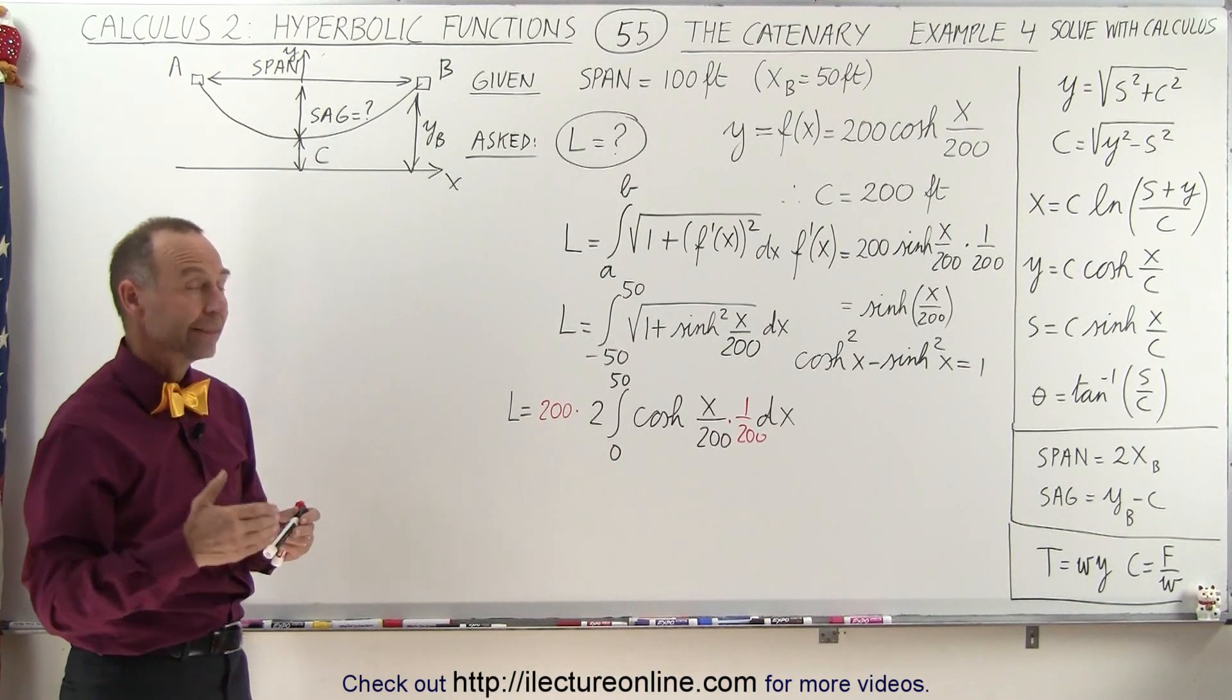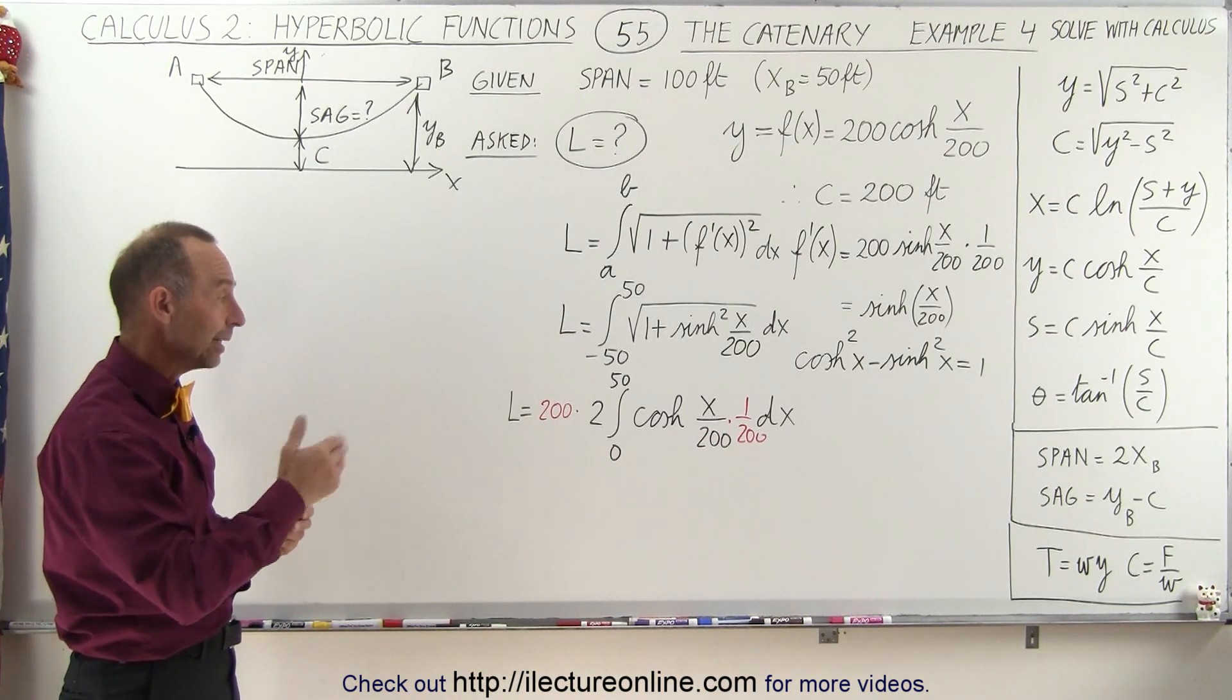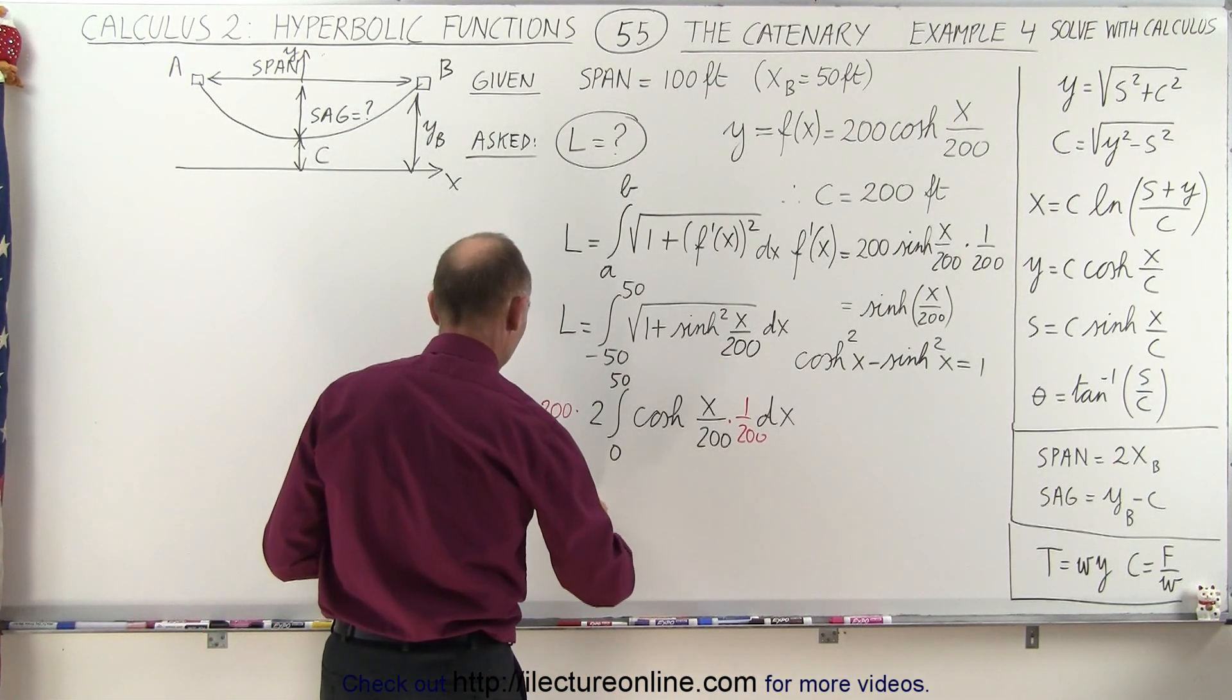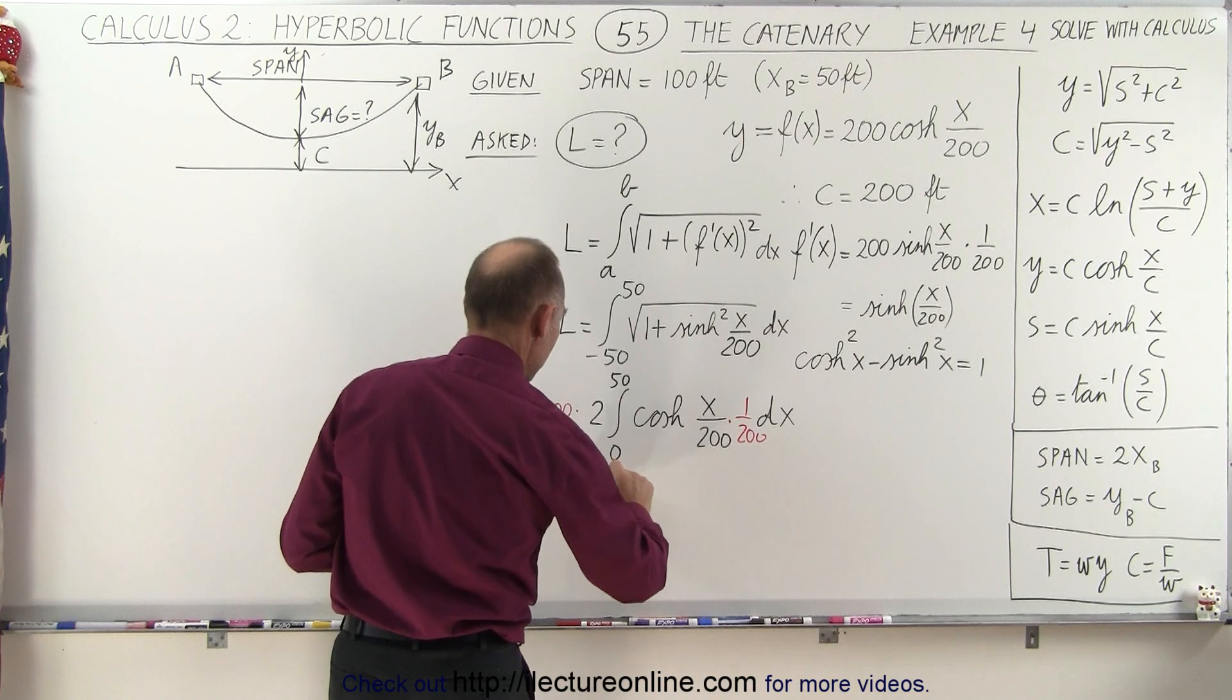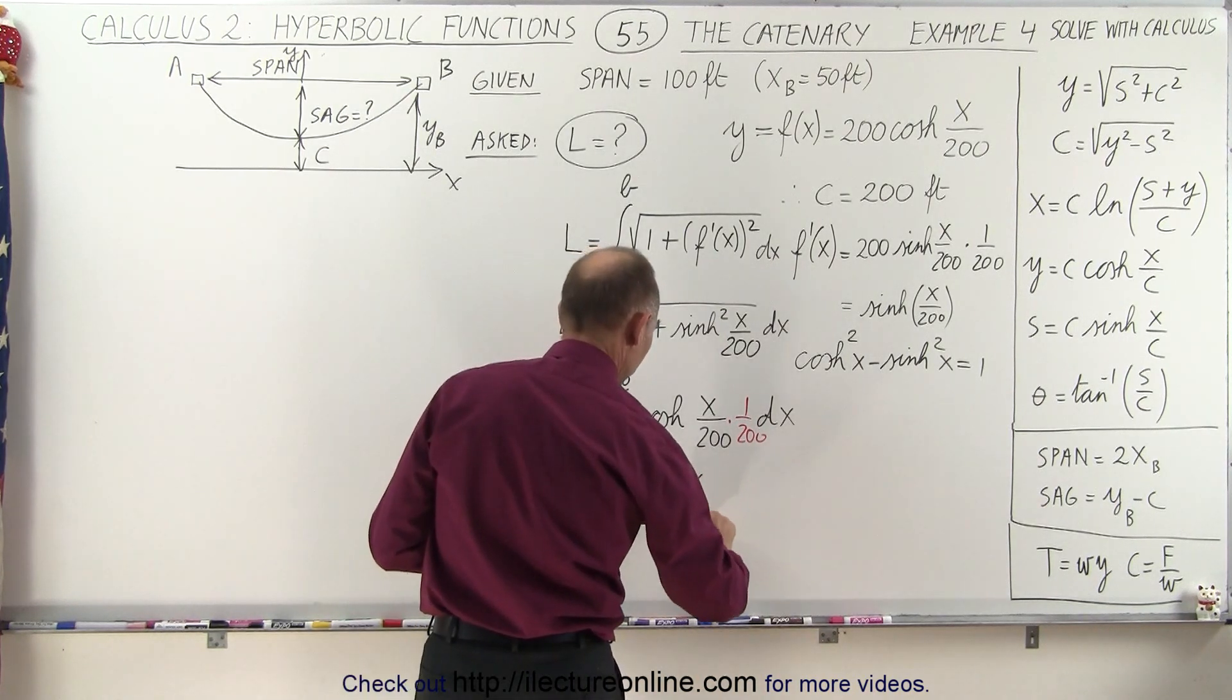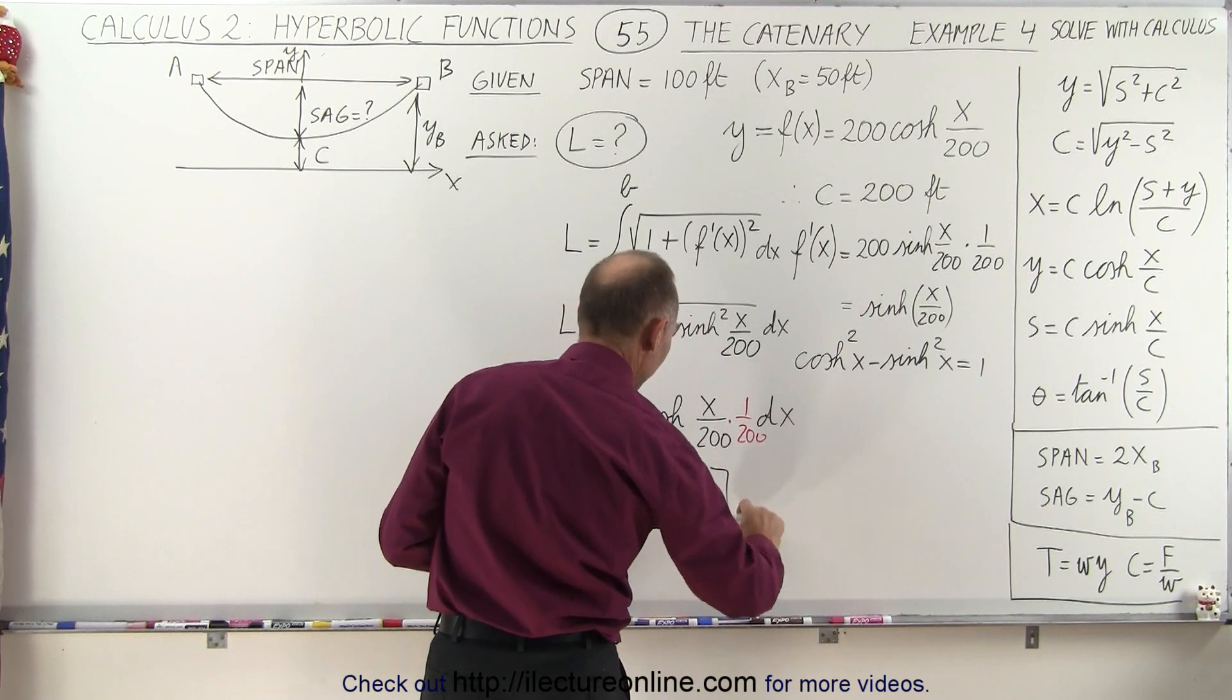Okay. So now we're ready to integrate the hyperbolic cosine. The integral of that is the hyperbolic sine. So this becomes equal to 400 times the hyperbolic sine of x over 200, evaluated from 0 to 50.